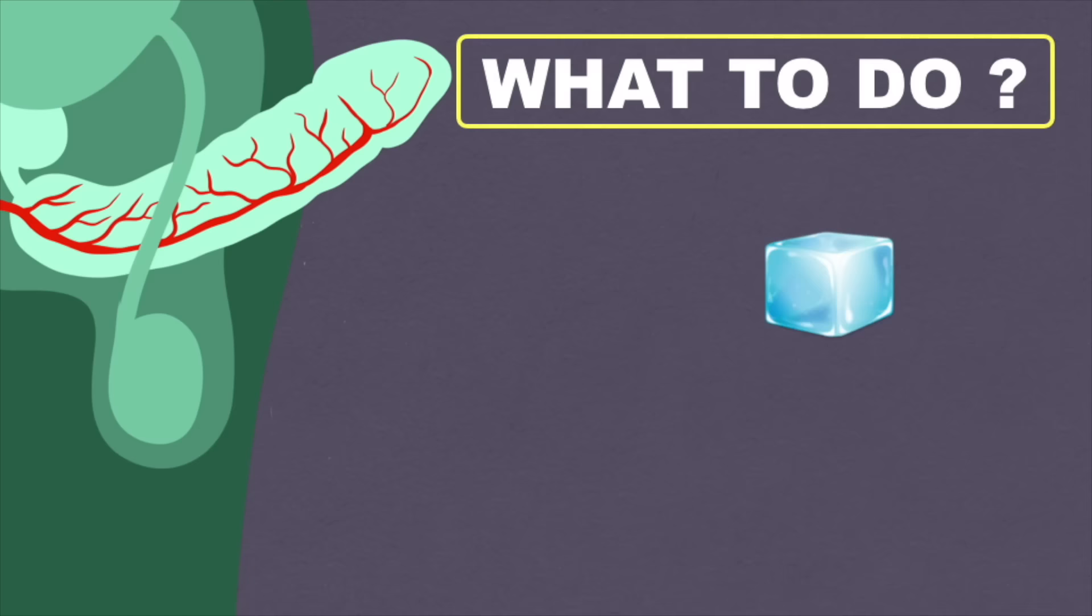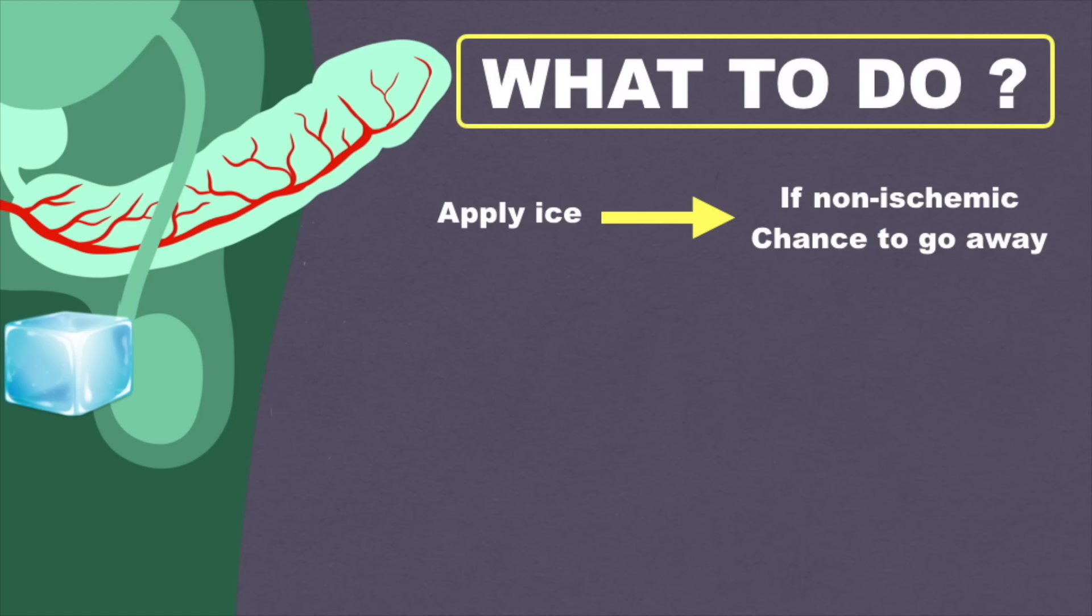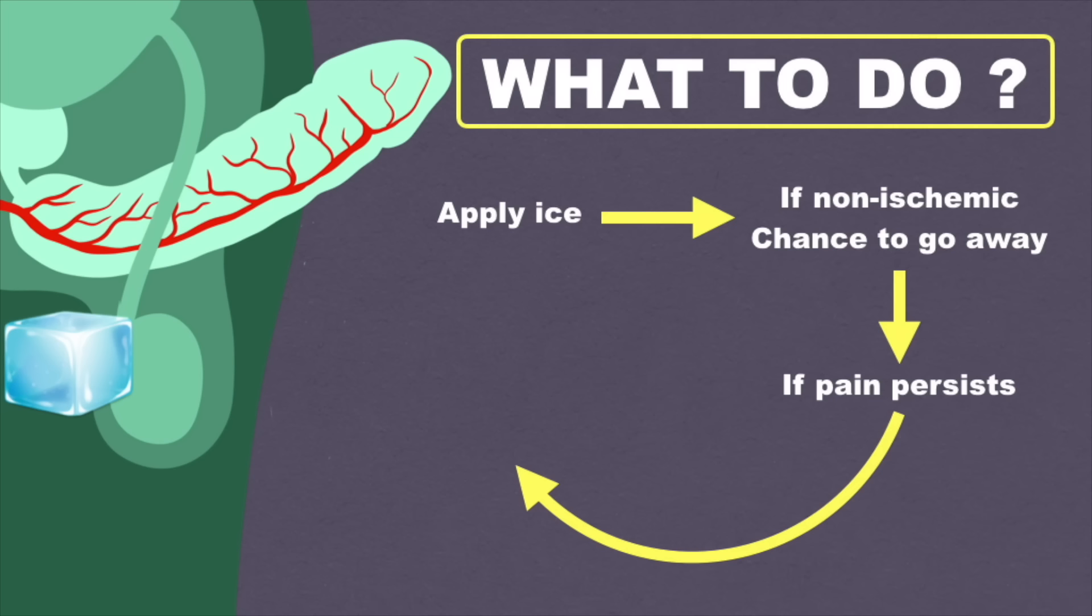Now what to do in that situation? You can apply ice packs on the penis and perineum. If the priapism is non-ischemic in nature, there is a chance that it will go away. However, most of the time it is ischemic in nature and the pain worsens with time. So in that situation immediately visit or consult your doctor.